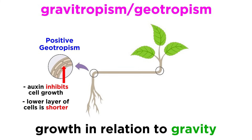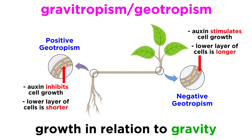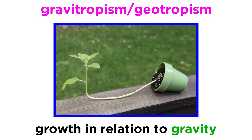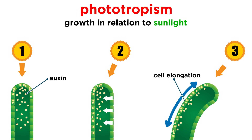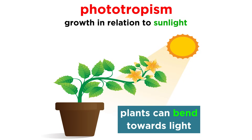Roots demonstrate positive geotropism, or growth towards the pull of gravity, while stems experience negative geotropism, growing away from the direction of gravitational pull. If you tip a potted plant on its side, and a few days later the stem has become bent and is growing straight up again, that's auxin at work. Auxin is also responsible for phototropism, or a plant's ability to sense and grow towards or away from light. If you notice the house plants on your windowsill appearing to bend towards the sunlight coming through the window, that's also the work of auxin.